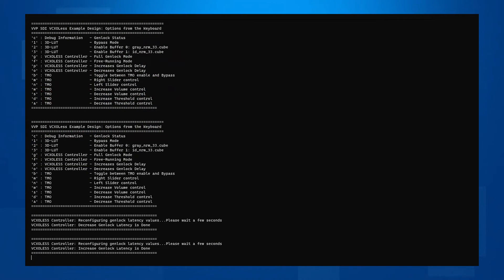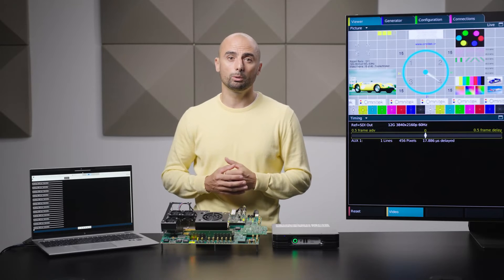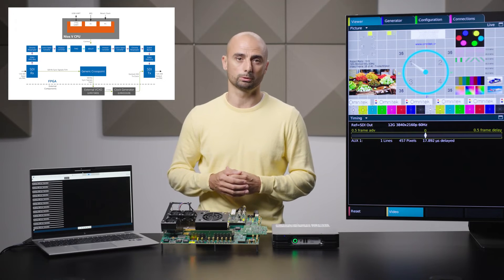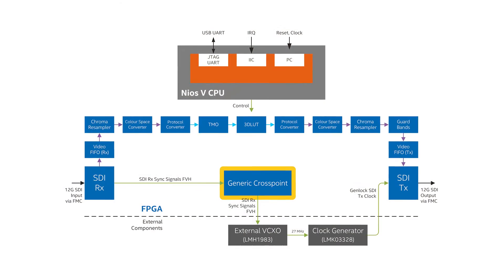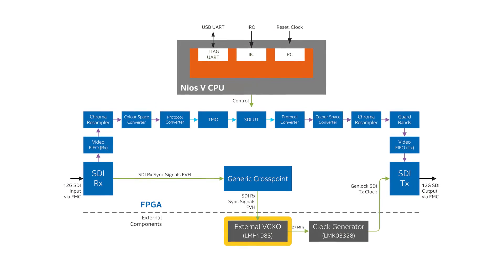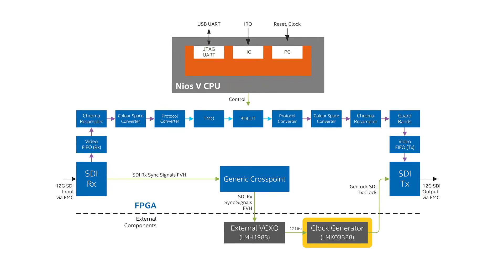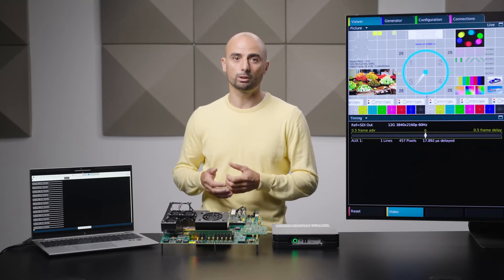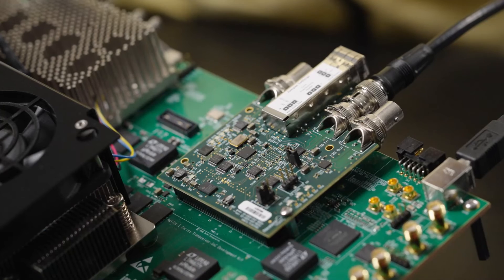As explained earlier, a similar genlock functionality can be achieved by using external off-the-shelf components. In addition to this VCXO-less design, we have also released a similar but slightly simplified example design which uses an external VCXO component to actively track the input and adjust the output clock. Instead of the VCXO-less subsystem, it uses a generic crosspoint IP to route field, vertical, and horizontal timing signals from the SDI RX to drive the external VCXO chip. Both the external VCXO and output clock generator are already available as part of the Nextera 12G SDI FMC card used in this example design. The overall controls to enable or disable genlock and adjust the latency are exactly the same.